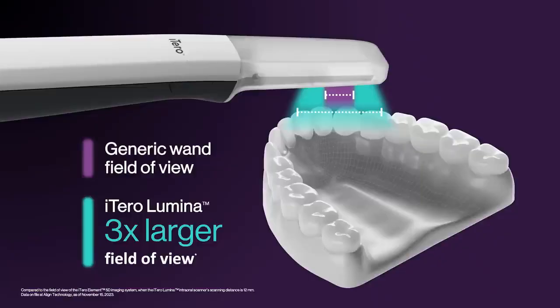Let's talk numbers and what those numbers mean for you. The field of capture for Lumina is three times larger than previous scanners, allowing you to capture wider segments of the arch in a single movement. The scanning becomes smoother, significantly faster, easier to complete and assures greater accuracy.